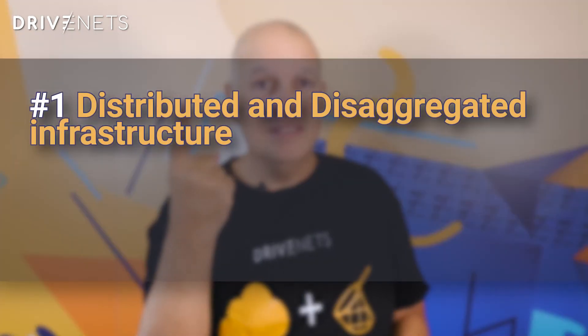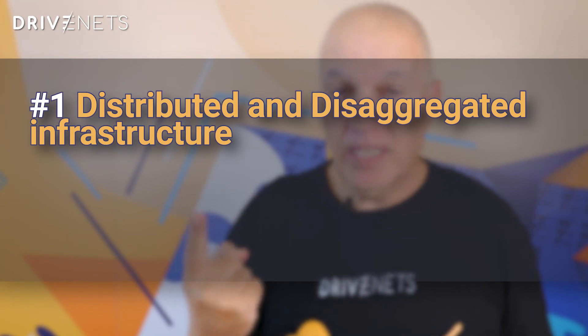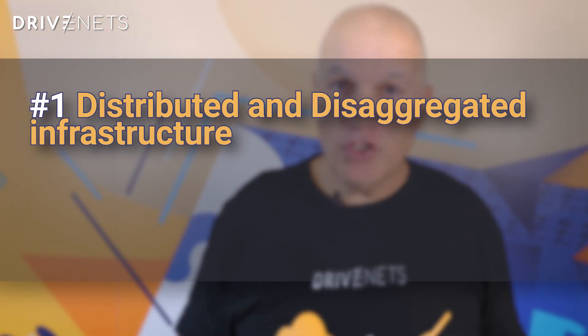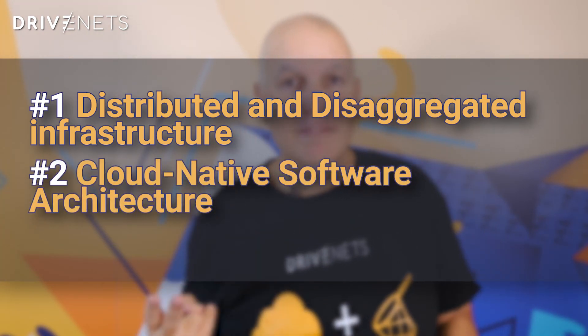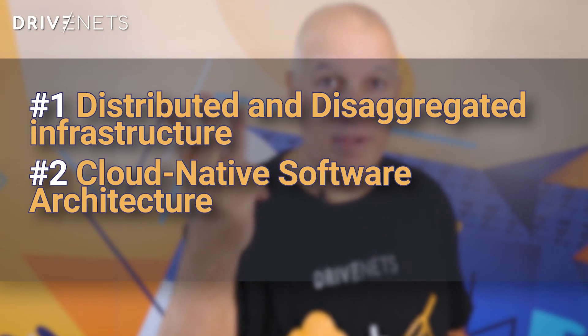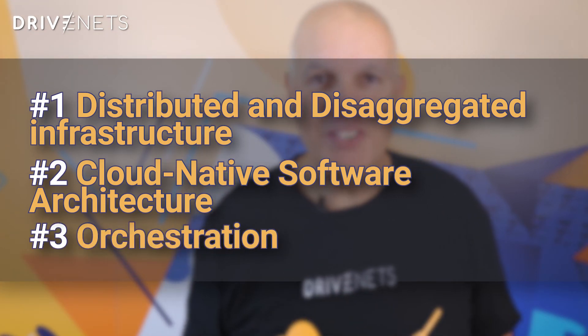So the three things you need to remember in order to know what is network cloud. One, distributed and disaggregated infrastructure. Two, cloud-native software architecture. And three — that's right — orchestration. Now you know what is network cloud.